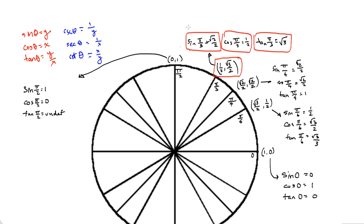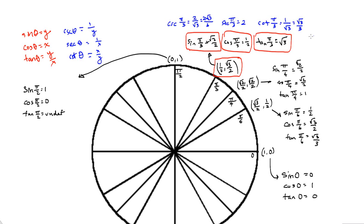Now for the other three — all we do is take the reciprocals. The cosecant of π/3 is 2/√3, and when you rationalize the denominator you get 2√3/3. The secant of π/3 is the reciprocal of 1/2, which is 2. And the cotangent of π/3 is the reciprocal of √3, which when rationalized gives √3/3.